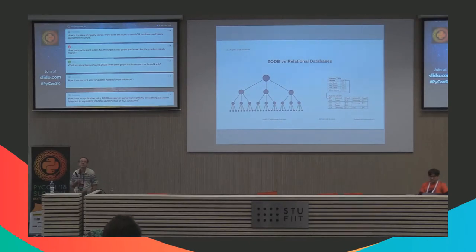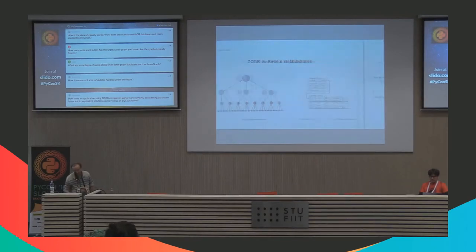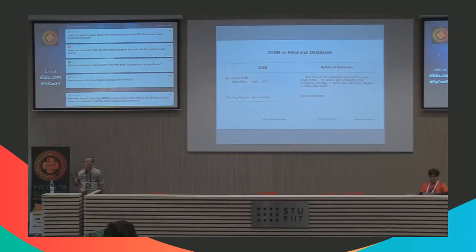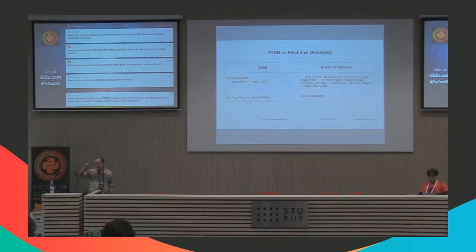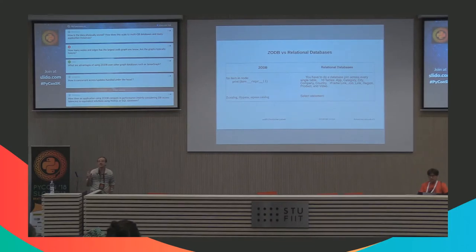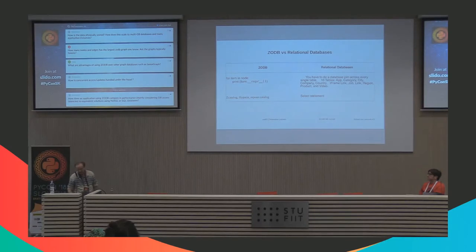How does the ZODB compare to relational databases? I have about 10 different classes. If I did it on a relational database, I'd have 10 different tables, and to see which objects are on a particular node, I'd have to do a join across 10 different tables — very slow performance. With the ZODB, I just iterate over the node, go over the children, and do whatever operation I want. Really easy. Of course, relational databases have easy index creation. In the ZODB you have to create those indexes yourself. So everybody's got strengths and weaknesses.